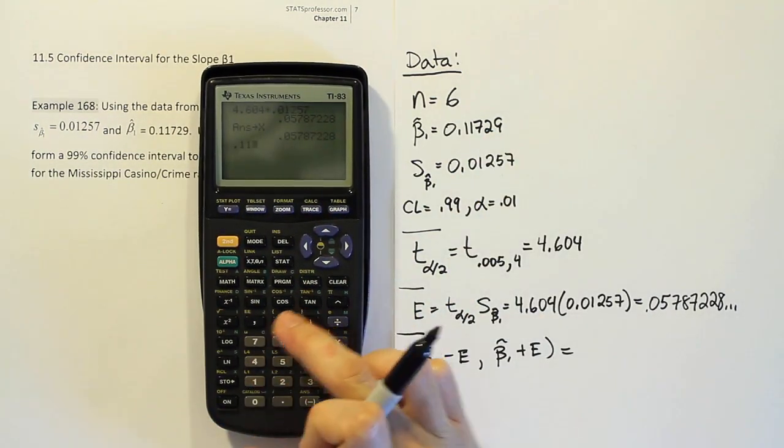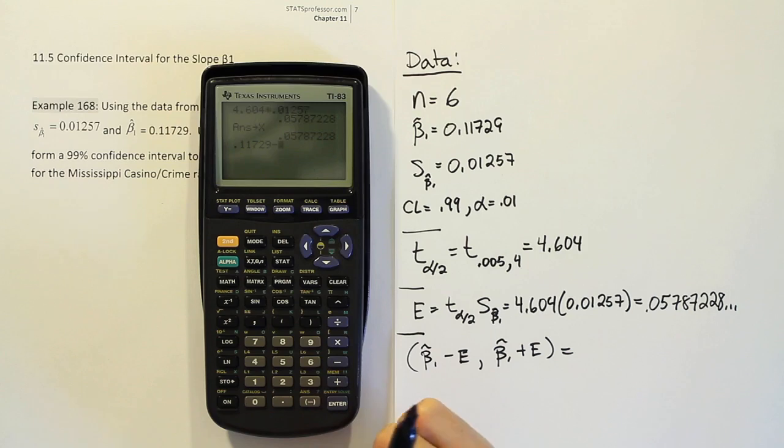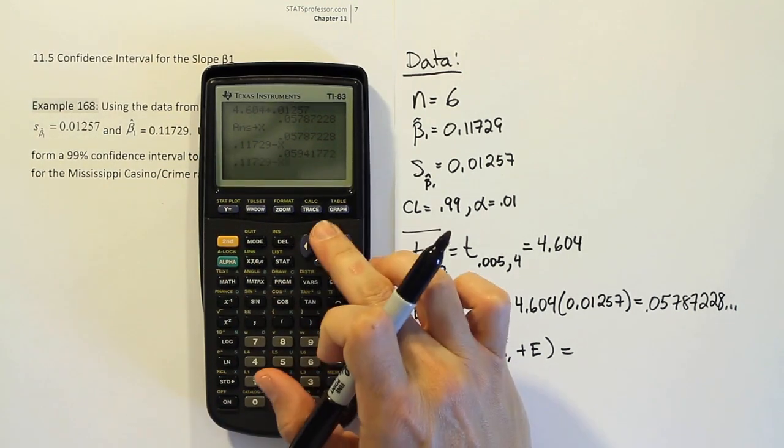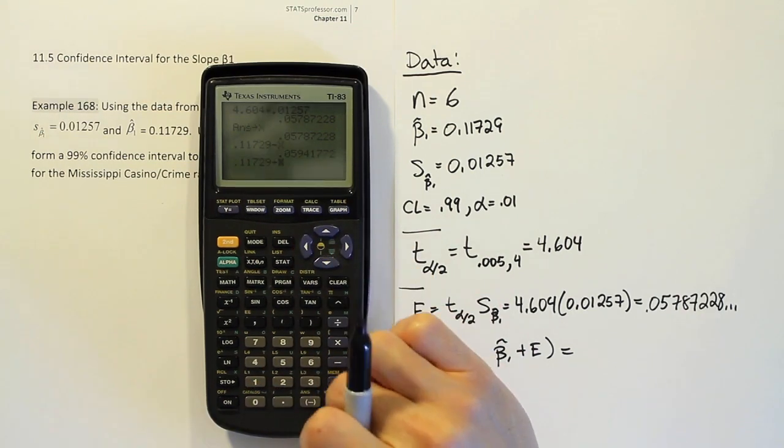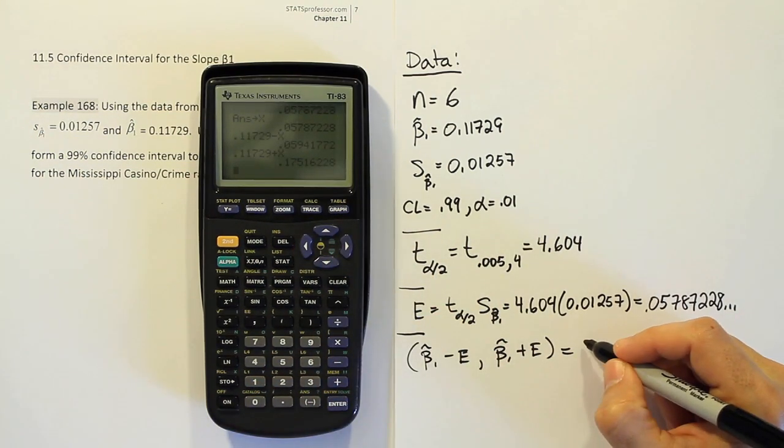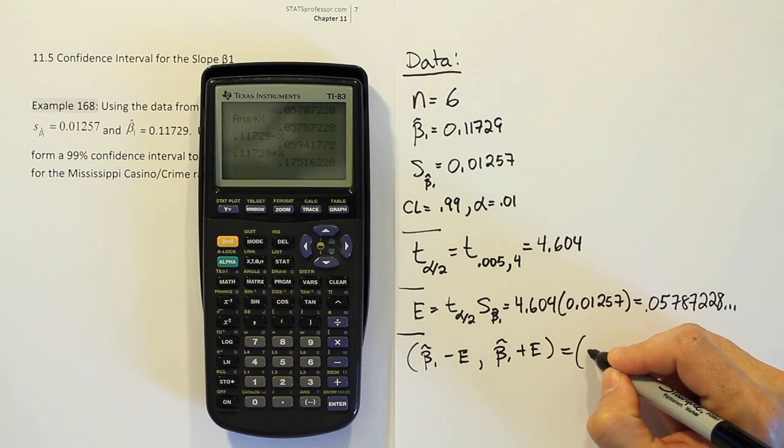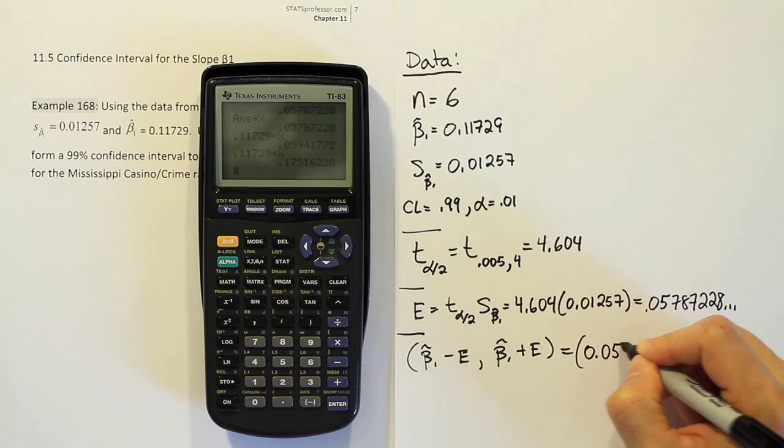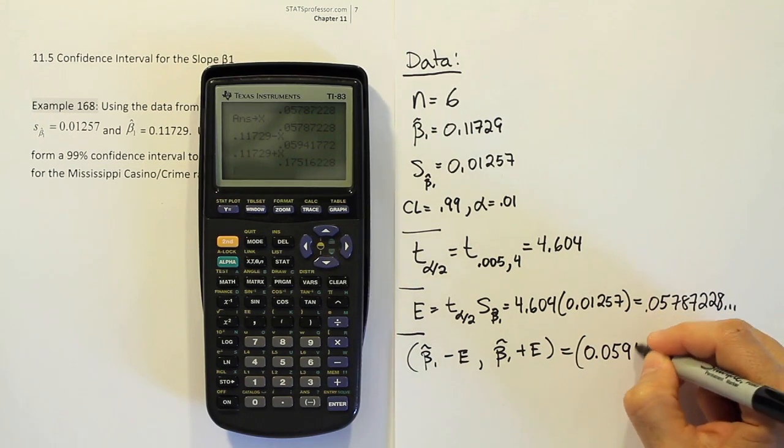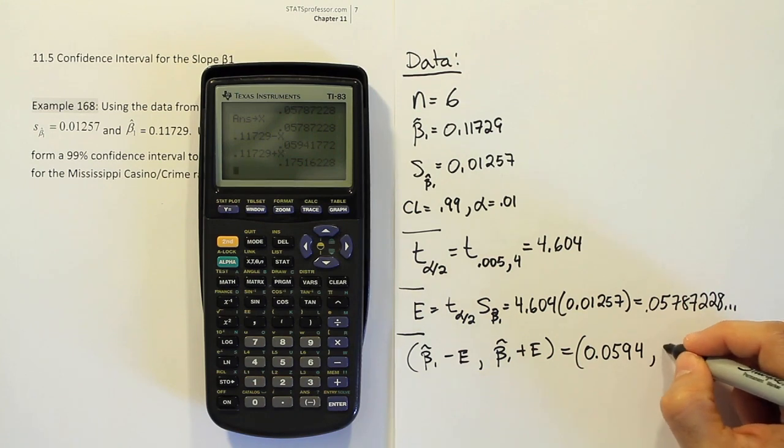0.11729 minus the value that we had for the error. And I'm going to do the same thing, calling it back up, and now adding the error. So our final results for the interval are 0.0594, let's say, up until 0.1752. So 1752.